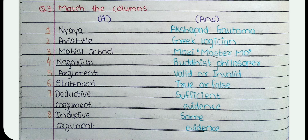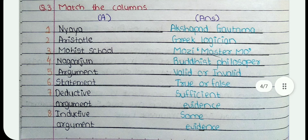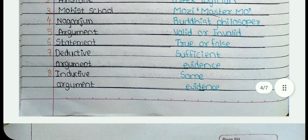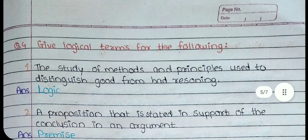5. Argument — the answer is valid or invalid. 6. Statement — the answer is true or false. 7. Deductive argument — the answer is sufficient evidence. 8. Inductive argument — the answer is some evidence.